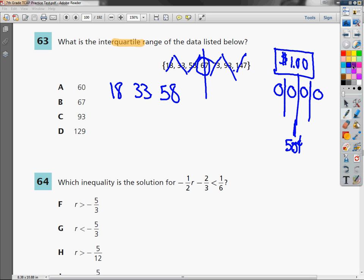On the right, I've got 73, 93, and 147. So now I'm going to find the middle, or the median, of these numbers.